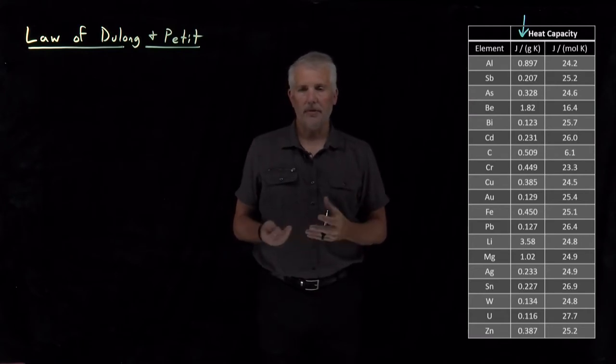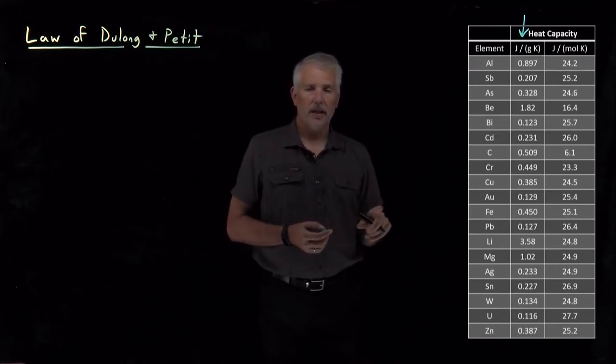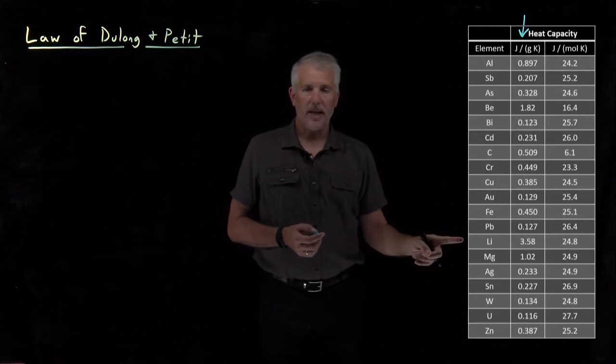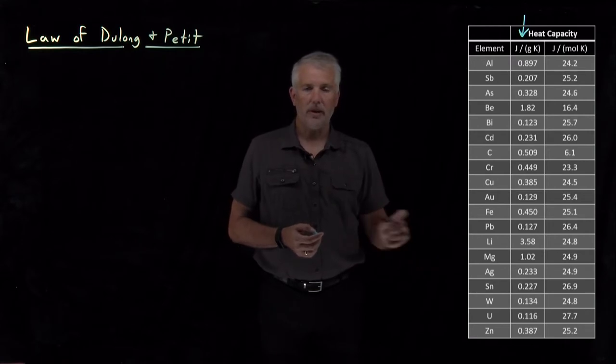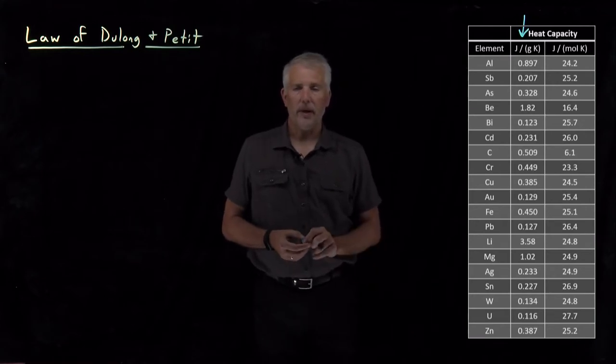Heat capacity is a property that's different for different materials. If you look the heat capacities up in a table, you'll find that it can be as large as perhaps 3.5 joules per gram Kelvin for lithium or as low as perhaps 0.1 joules per gram Kelvin for uranium.